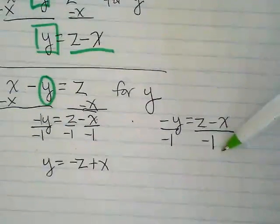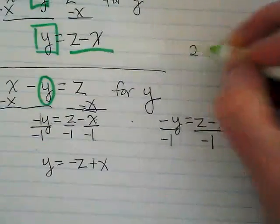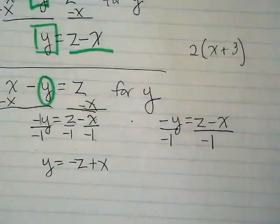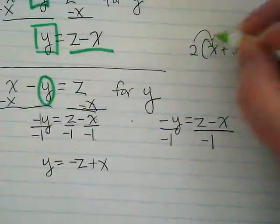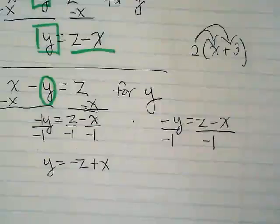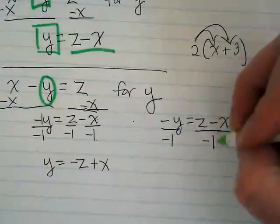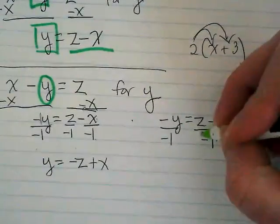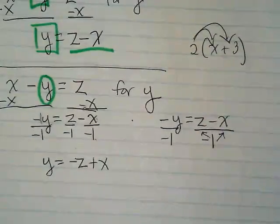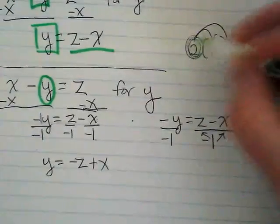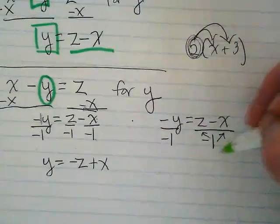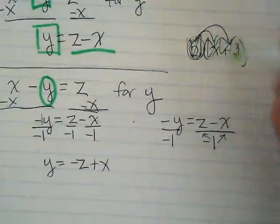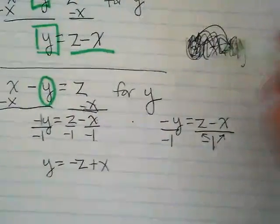But think of this as kind of the opposite of if I did two times X plus three. I would need to distribute this to both of those, right? I need to divide both of these by that negative one when I write it that way. It's kind of like just putting that two out there. If I put it just once under here.